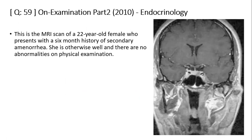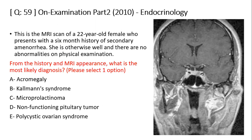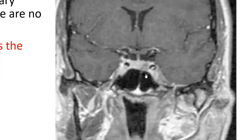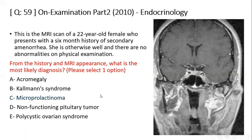Another question: MRI scan of a 22-year-old female with a six-month history of secondary amenorrhea, otherwise well with no abnormalities on physical examination. The MRI shows the anterior pituitary with a small lesion. From the history and MRI appearance, what is the most likely diagnosis? Options: acromegaly, Kallmann syndrome, microprolactinoma, non-functioning pituitary tumor, or polycystic ovarian syndrome. The answer is microprolactinoma.